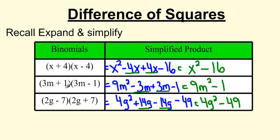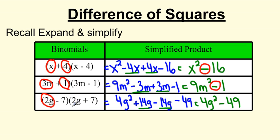I want you to recognize this pattern. For x plus 4 times x minus 4, the answer is the square of the first term — x squared — minus the square of the second term — 4 squared is 16 — with always a subtraction sign in between. Similarly, 3m plus 1 times 3m minus 1 gives 9m squared minus 1. And 2g minus 7 times 2g plus 7: square the first term gives 4g squared, square the second term gives 49, with a subtraction sign in between. This pattern will help us when we factor difference of squares back into two binomials.